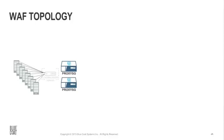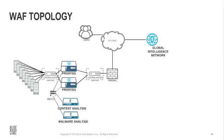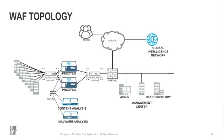In a typical WAF deployment, the ProxySGs are deployed in a DMZ front-ending a web server farm. Depending on scalability and throughput, you might use a load balancer in front of the ProxySGs, and depending on network requirements, a load balancer may be deployed on the backend as well. The content analysis system and malware analysis appliance can be integrated via ICAP. Other components include an admin workstation, Bluecoat Management Center, a user directory such as Microsoft Active Directory, and Reporter. The full WAF solution consists of ProxySG, Management Center, and Reporter.